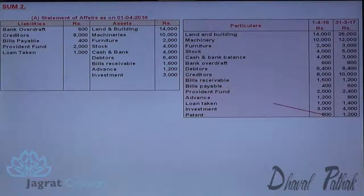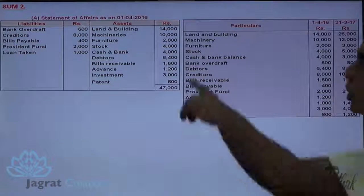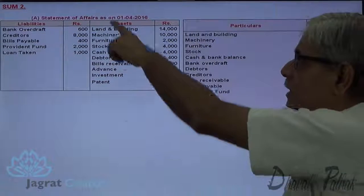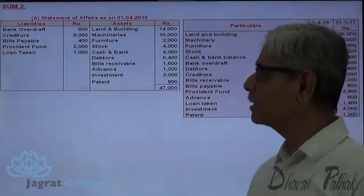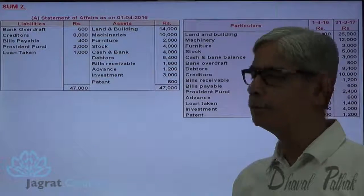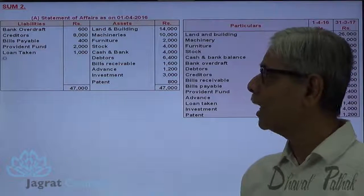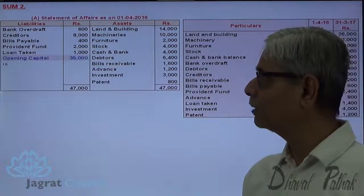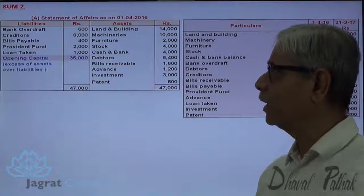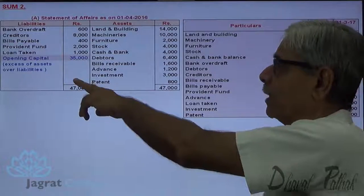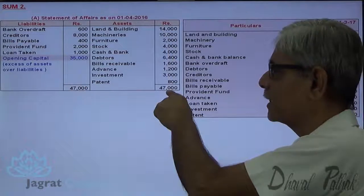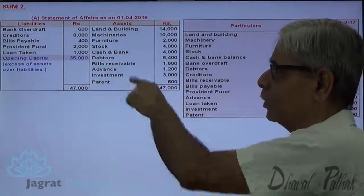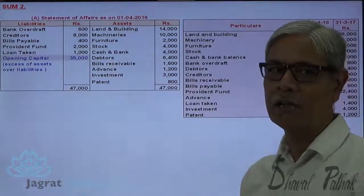So these are the total of assets, minus liabilities. I will get the capital at the beginning of the accounting period — that is, the excess of assets value over the liabilities.